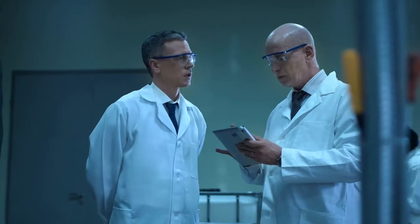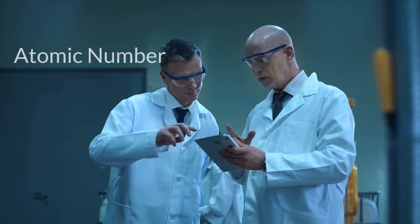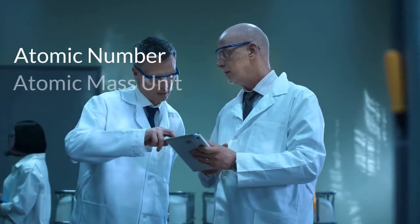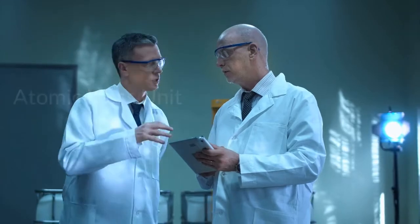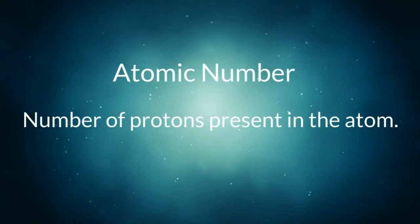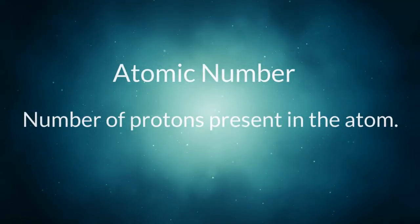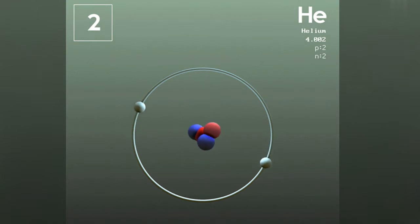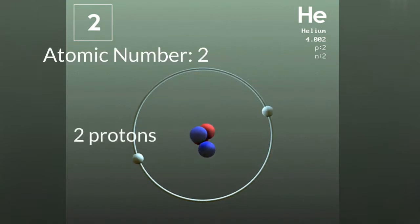Scientists assign atoms an atomic number and an atomic mass unit. The atomic number is the number of protons present in the atom. For example, a helium atom has two protons, so its atomic number would be two.